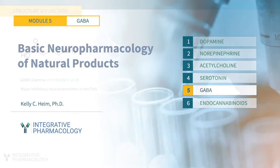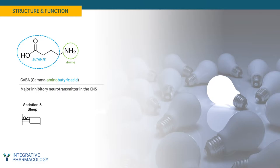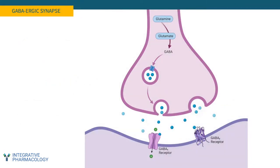In this module, we'll talk about GABA, which stands for gamma-aminobutyric acid. GABA's structure is shown here. It has a butyrate and an amine functional group. GABA is the major inhibitory neurotransmitter in the central nervous system. It's also a key target of pharmacotherapies in the treatment of anxiety and insomnia. We'll explore how GABA works in this short tutorial.